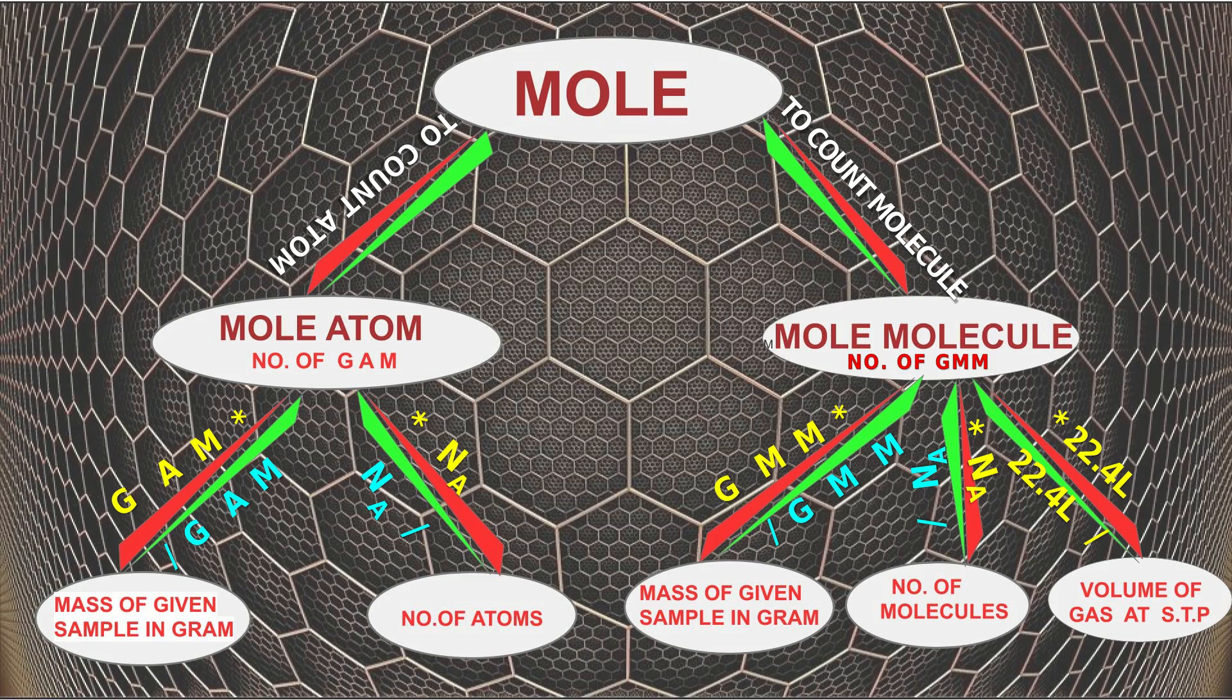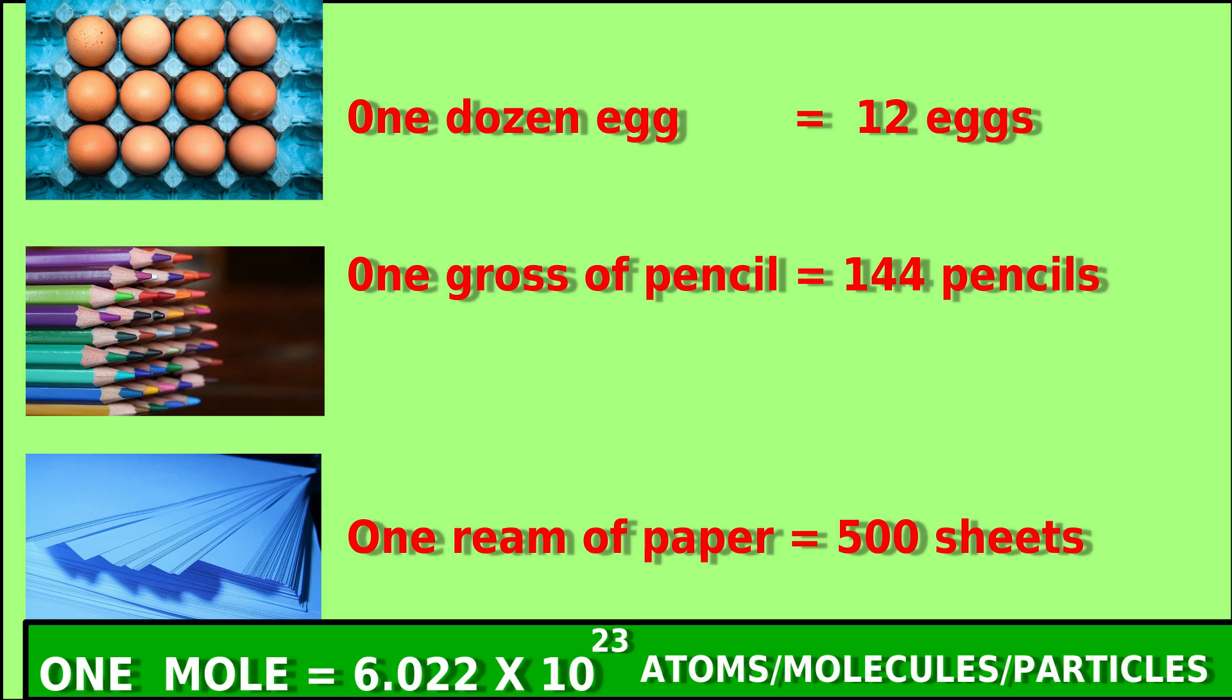We are very familiar with these terms to count different things. One dozen eggs means 12 eggs, one gross of pencil means 144 pencils, and one ream of paper means 500 sheets.